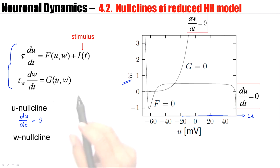Suppose the stimulus is zero. Then the U nullcline corresponds to all the points where F as a function of U and W is zero. And this is what we have here.